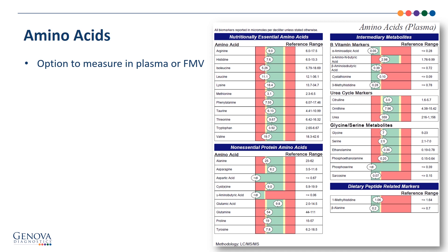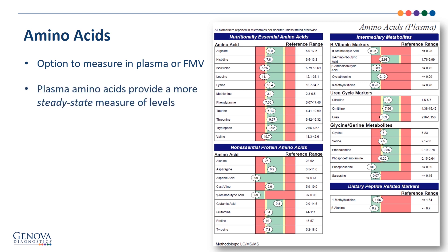You need to order the kit based on that. All other sections of the NutraVal are the same. The only differential here is plasma or first morning void amino acids. Plasma amino acids provide a more steady state measure of levels — a time frame of about 24 days regarding dietary intake of protein. In a first morning void amino acids test, you're really looking at the more immediate dietary intake of protein over the last 24 to 48 hours.